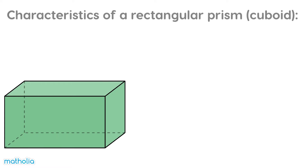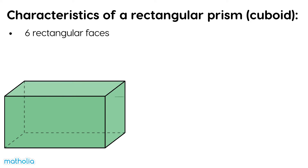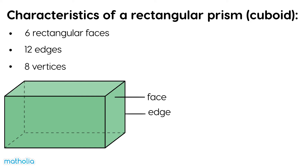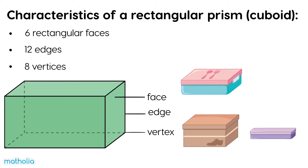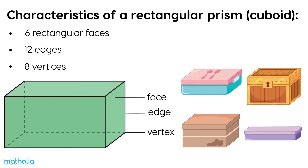What are the characteristics of a rectangular prism, also known as a cuboid? It has six rectangular faces, twelve edges, and eight vertices. Check out these objects that are shaped like rectangular prisms.